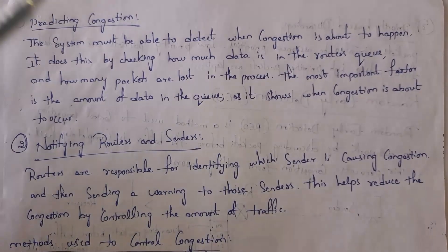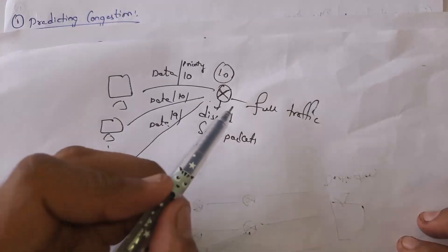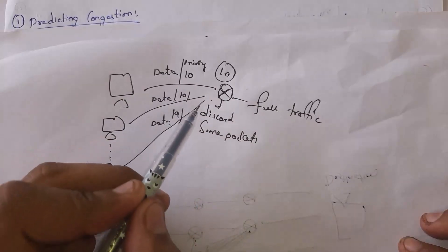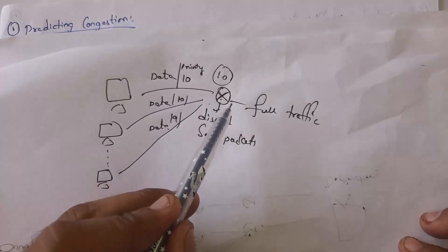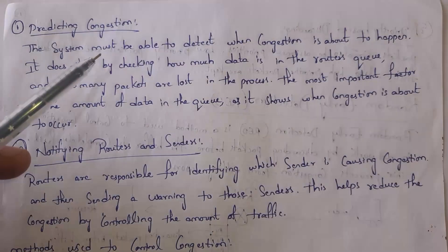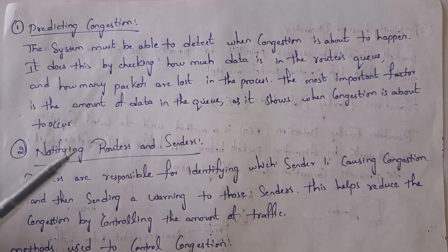Traffic throttling follows two main operations: predicting congestion and notifying routers and senders. If there is too much data in the queue for a particular router, congestion is able to occur. The router will identify which sender is causing congestion — that is, which sender is sending too much data — and send an alert message to that particular sender to slow down the data transfer. Based on how much data is in the queue, the router identifies whether congestion will occur, and whenever there is a chance for congestion, the router informs the sender to send data more slowly.